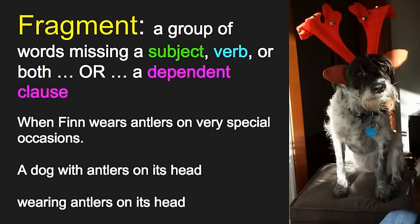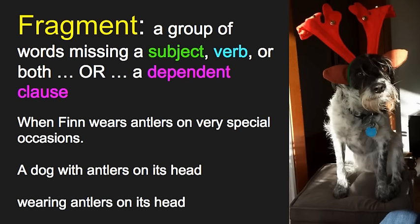Another way something can be a fragment is if it's a group of words missing a subject, a verb, or both. For example, 'A dog with antlers on its head' — there's no verb, no action word, it doesn't express a complete thought, so we have a fragment. Or we might be missing a subject: 'Wearing antlers on its head' — we don't know who's wearing it. That's also a fragment.